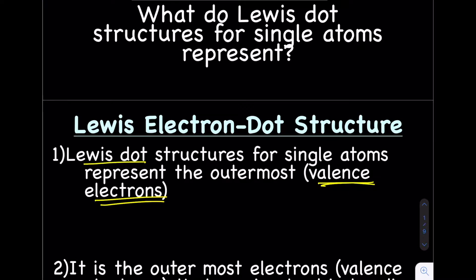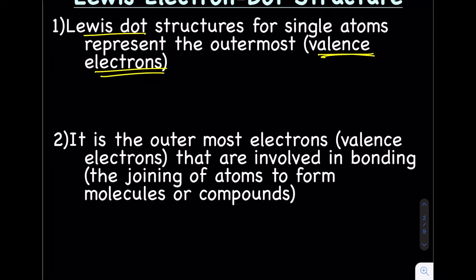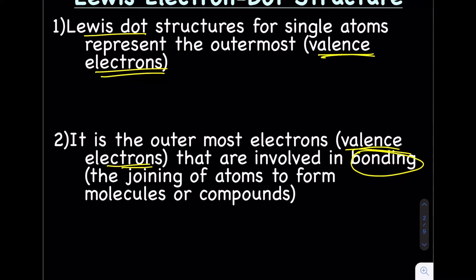Why valence electrons? Why do we want to draw something that only represents the valence electrons? Well, for chemistry, valence electrons are really important because it's the valence electrons that are involved in bonding, which is joining two or more atoms together to make molecules or compounds. The first step of being able to understand bonding is to understand and identify the valence electrons and how they're arranged around the atom. The Lewis dot structure is sort of a rough draft picture of that to make it more clear.